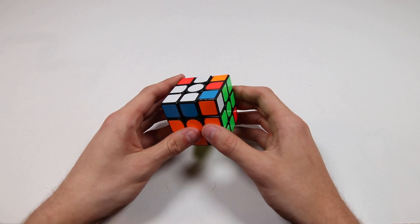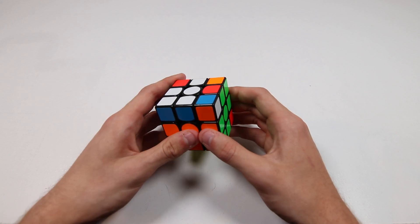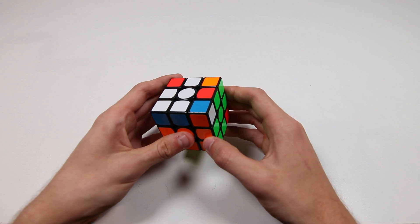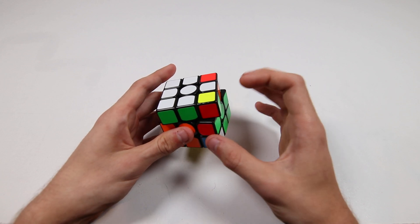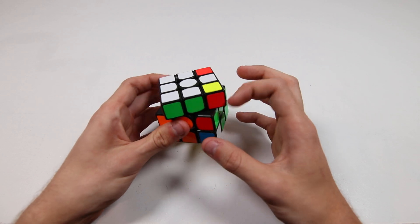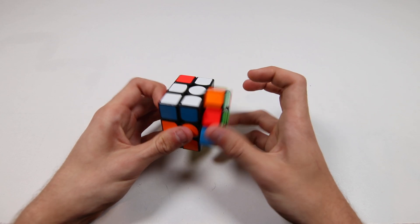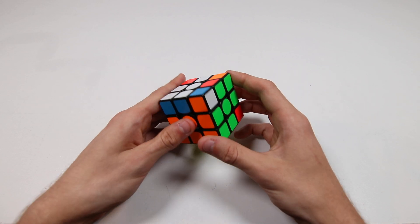The other thing to note is that when the R prime is followed up with a U turn, so here it would be like R prime U, I've found personally that just doing that U turn with right middle instead of right index makes it work, or it makes it flow a lot easier for me.